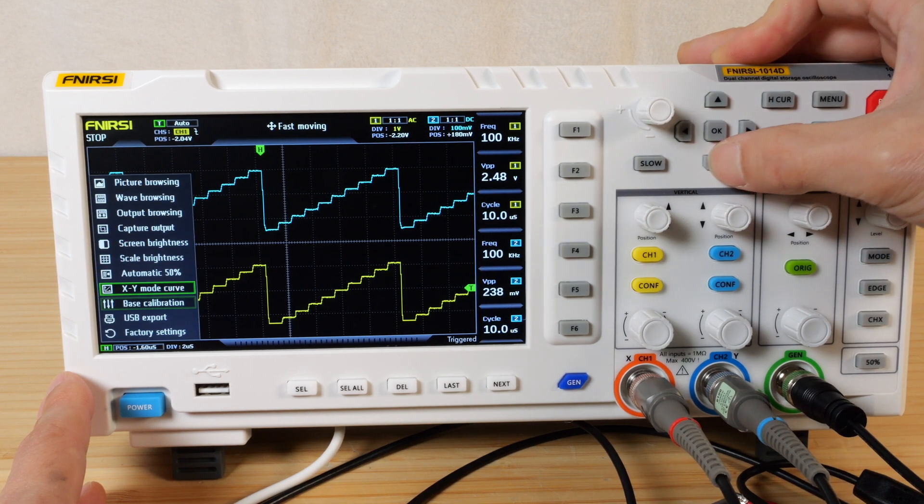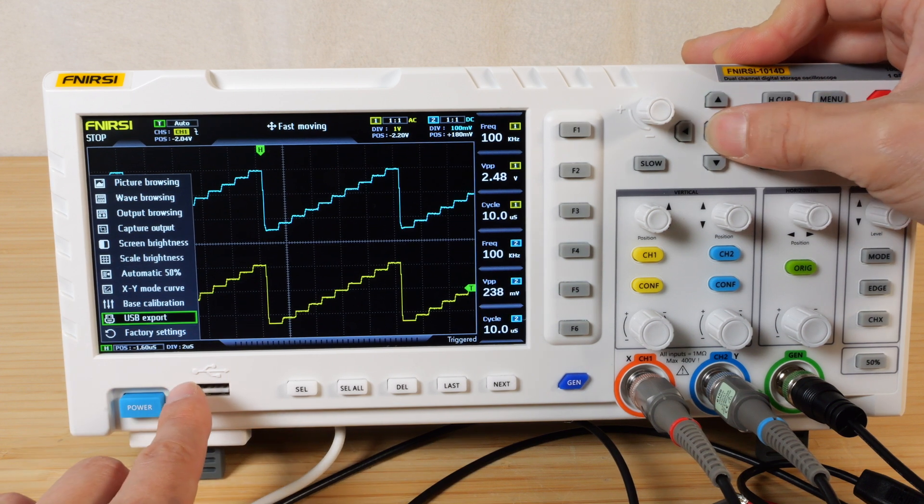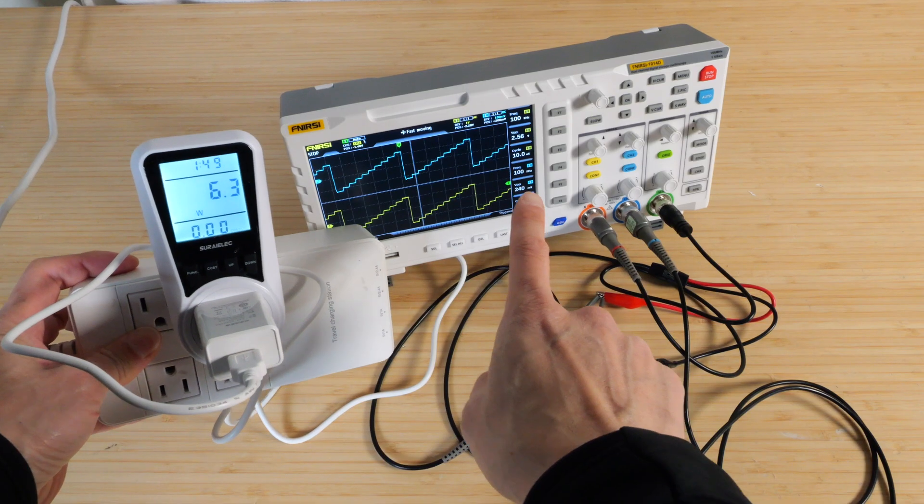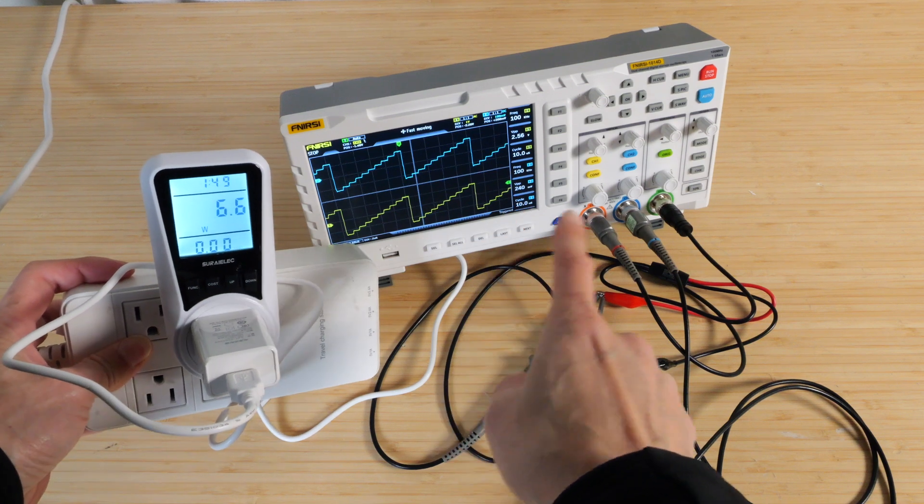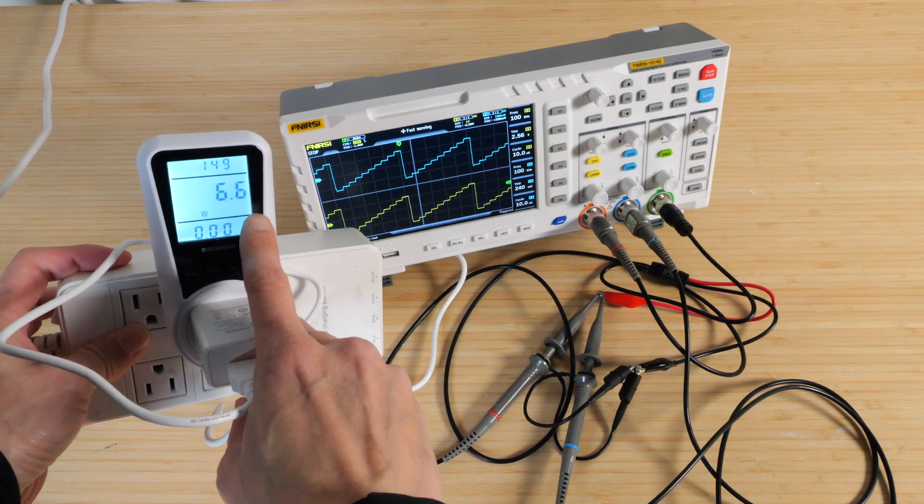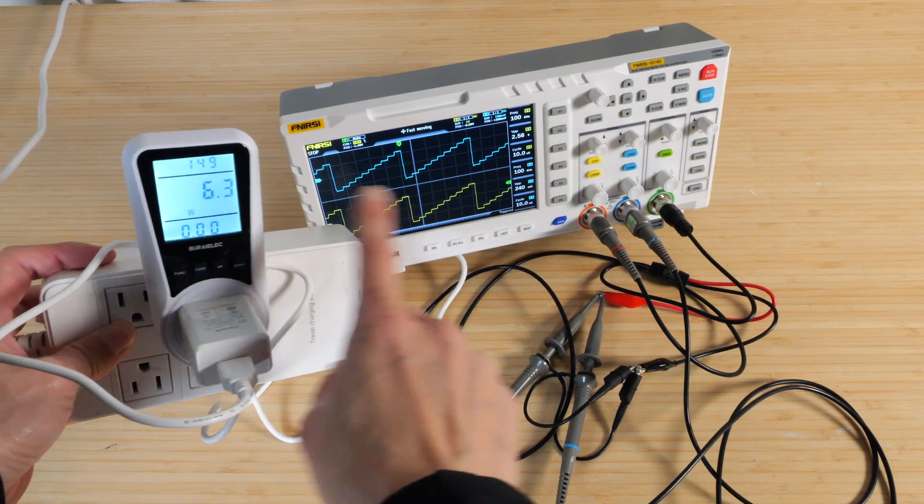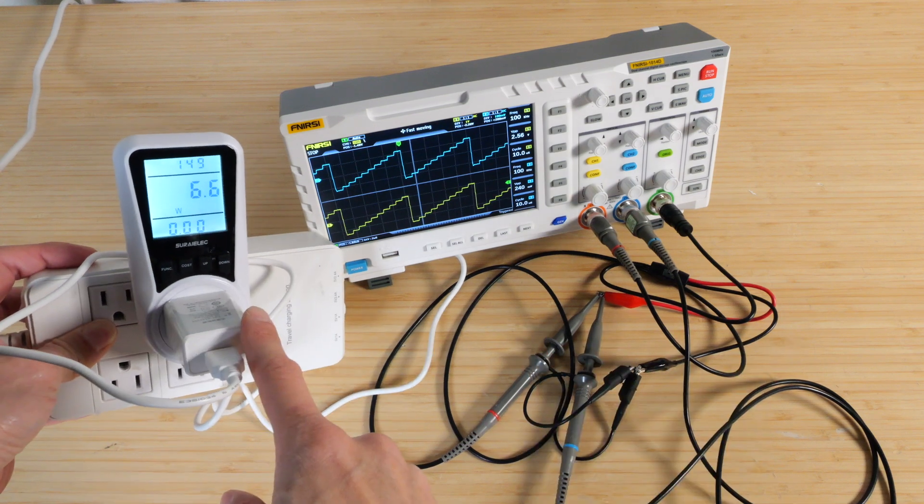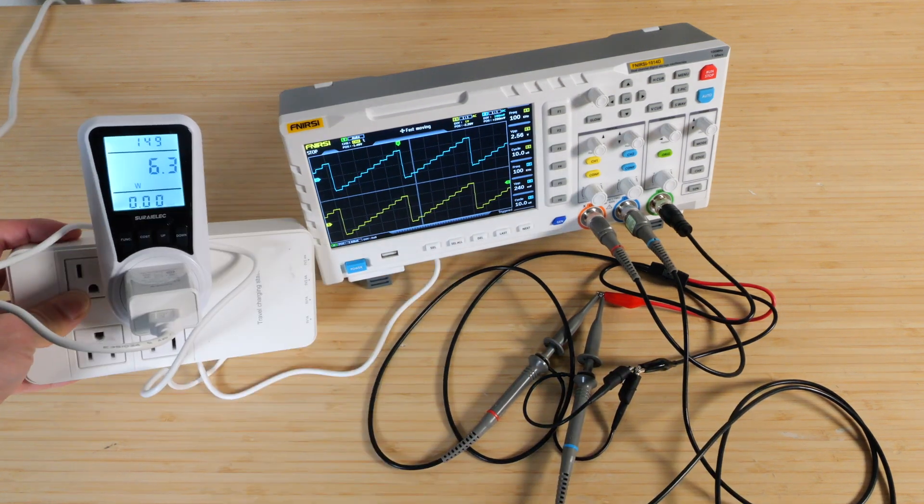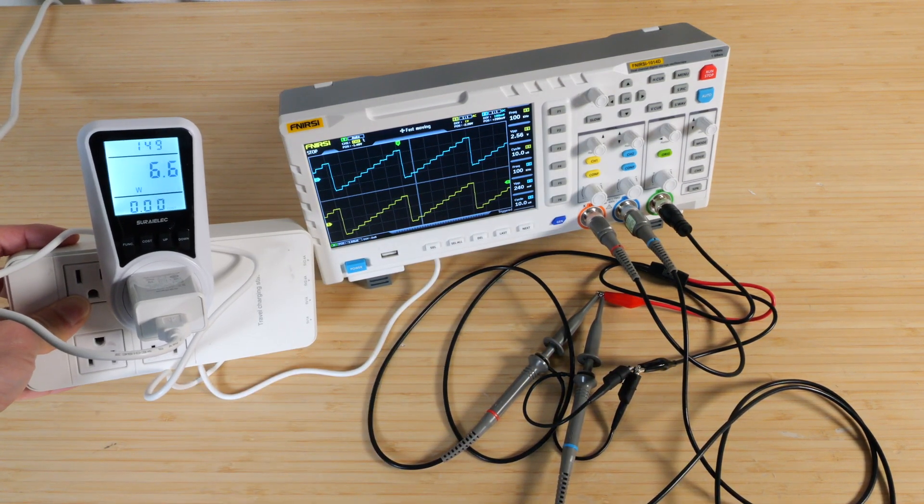Base calibration. We have to pull out all the probes to calibrate. Let's not do that right now. USB export. So we can plug in a USB and it's going to export all the data it has. Even with it outputting all this funny signal and using both channels, it's still using only about 6.6 watts for the entire thing. The AC adapter is capable of 10 watts. So this is a very power sipping device.